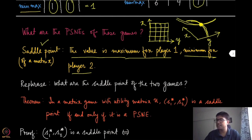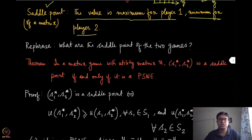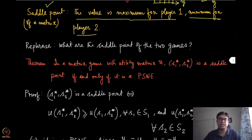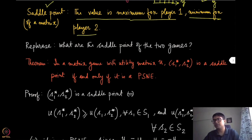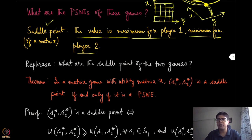We will use the name saddle point for games as well. In a two-person zero-sum game or matrix game, these two notions are one and the same: saddle point means pure strategy Nash equilibrium. You can try this exercise yourself — what are the saddle points of these two games? In the penalty shootout game there does not exist any saddle point, because you cannot find any point which is a column maximum and also a row minimum. But for the second game there exists a saddle point.